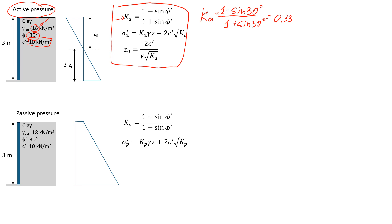Next, we're going to estimate the effective active stress. We're going to estimate it at two levels: the first at the surface where the wall starts, and the second at a depth of three meters where the wall ends. Let's look at the first one when z is equal to 0, right on the surface. If we look at the formula, this component depends on depth, so if z equals 0, this component will be equal to 0 as well.